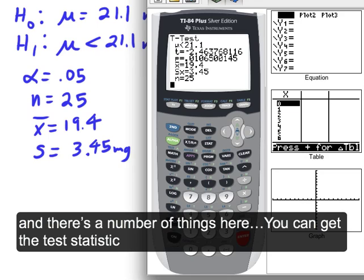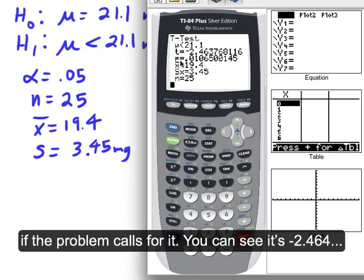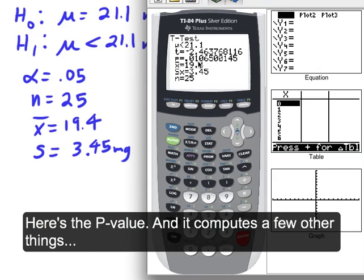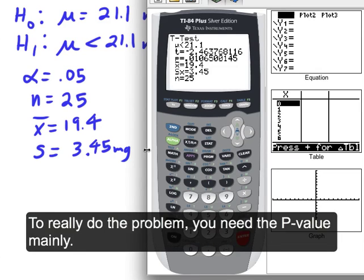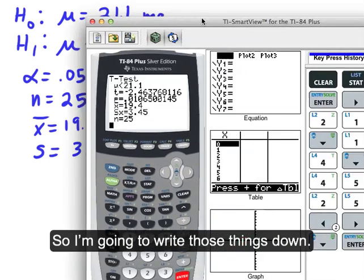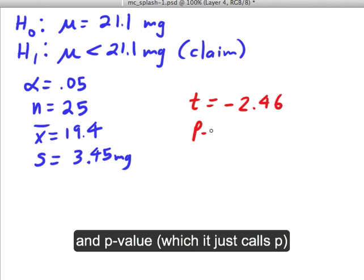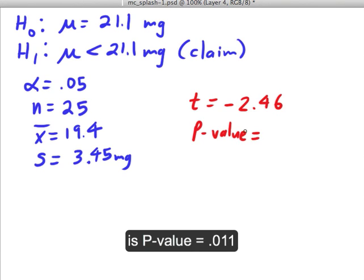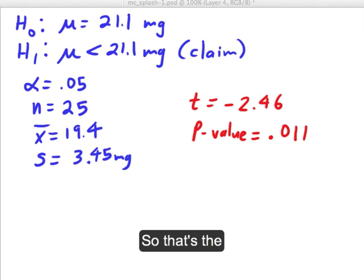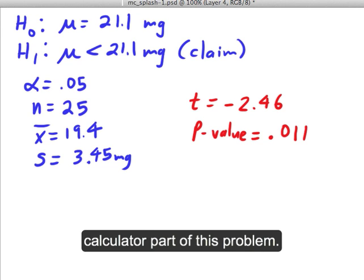So we're doing t-test stats, 21.1 is the mu zero, 19.4 is the sample mean, 3.45 is the sample deviation, 25 is the sample size, and less than is the direction of extreme, the inequality of H1. And then hit calculate down here. And there's a number of things here. You could get the test statistic. If the problem calls for it, you could see the test statistic is negative 2.45. Here's the p-value, and it computes a few other things. To really do the problem, you need the p-value mainly. So I'm going to write those things down. But if we want the test statistic too, we can do that. So t equals negative 2.46. And the p-value, which it just calls p on the calculator, is 0.01 and then it's 06. I'm going to round it to 0.011.